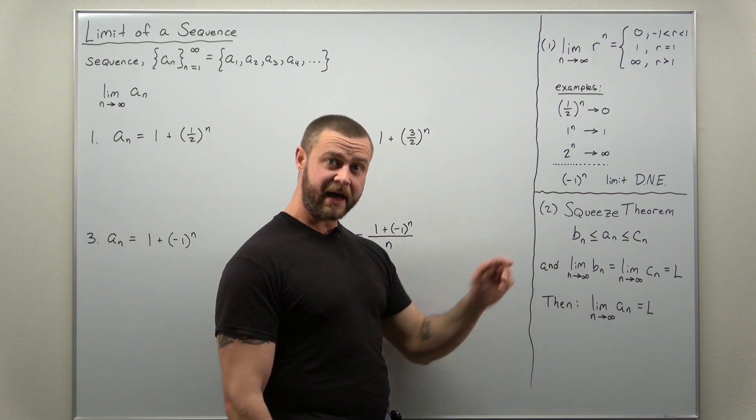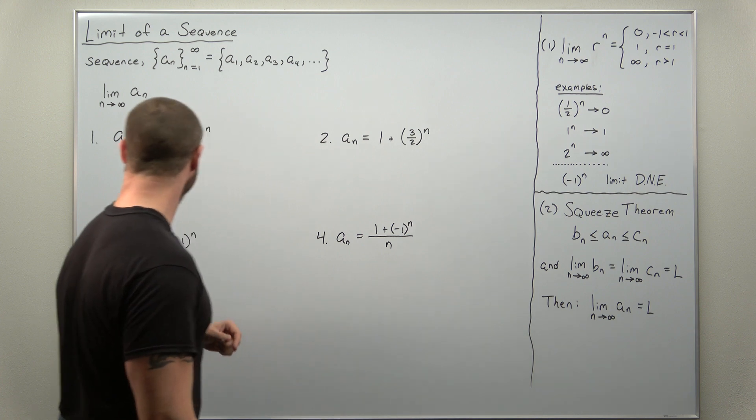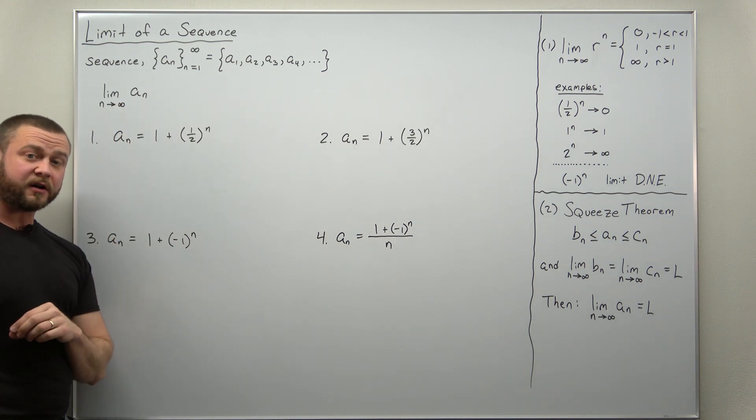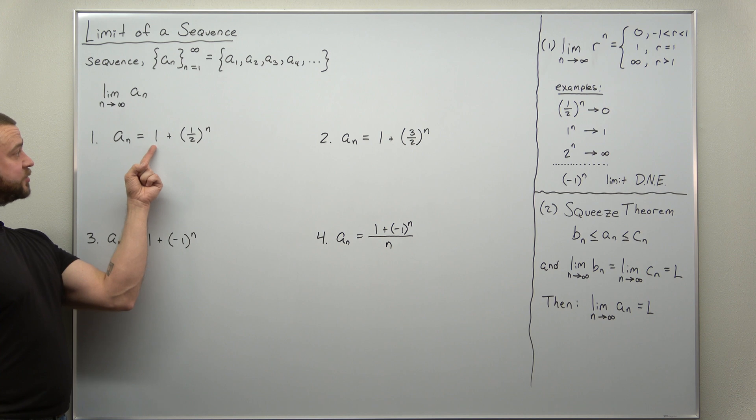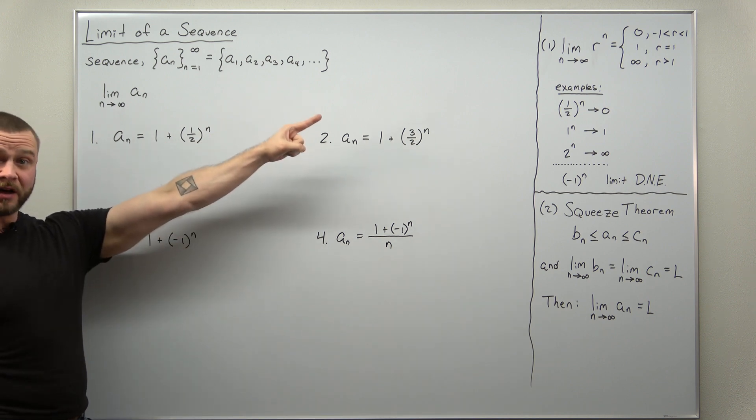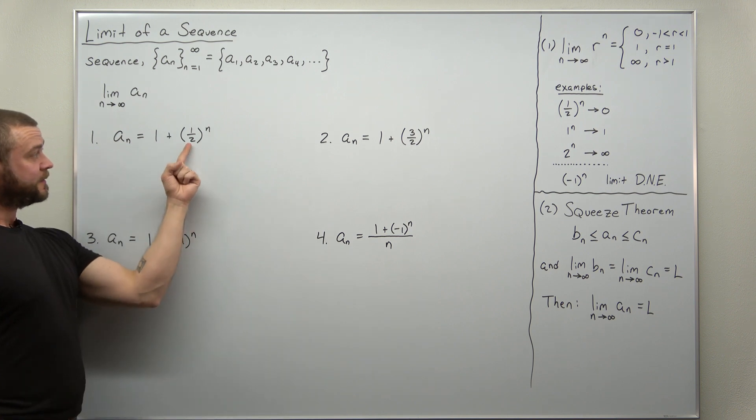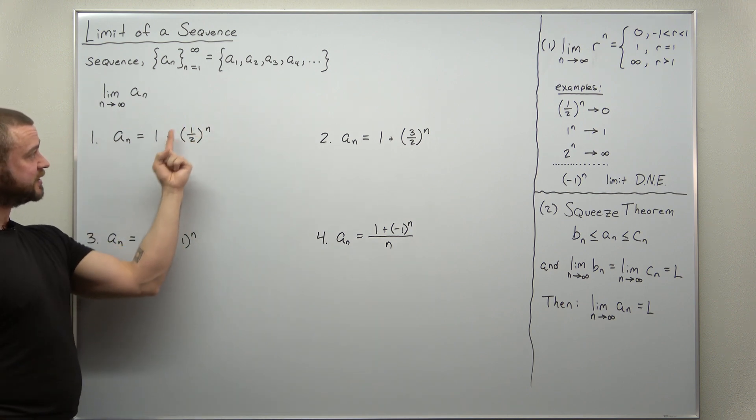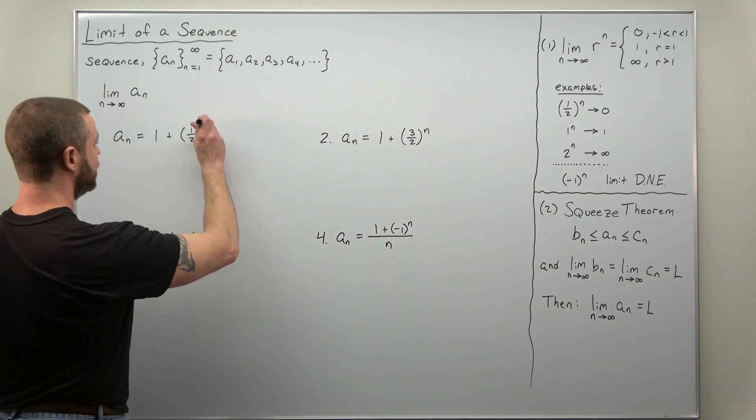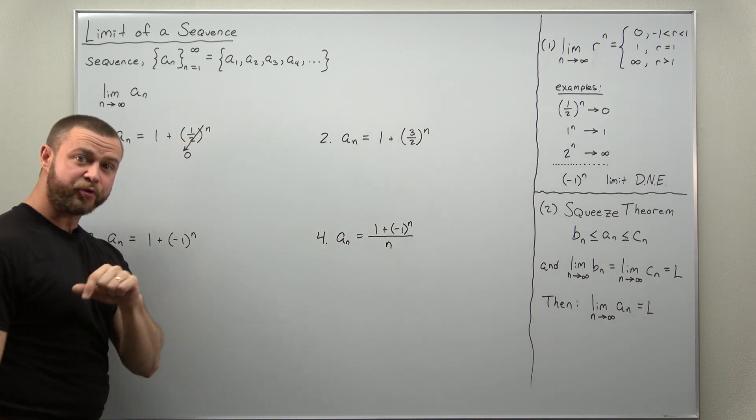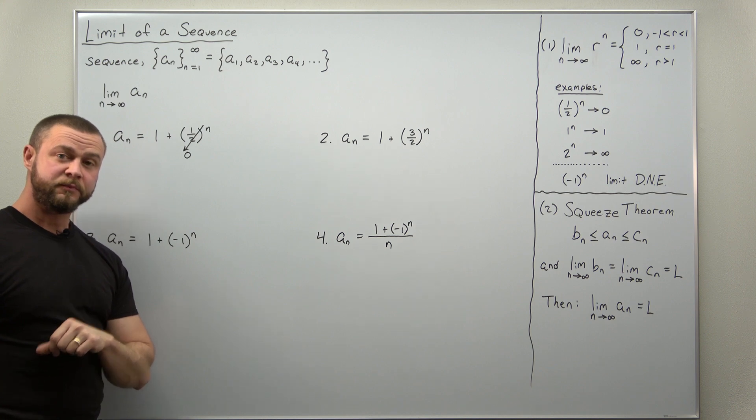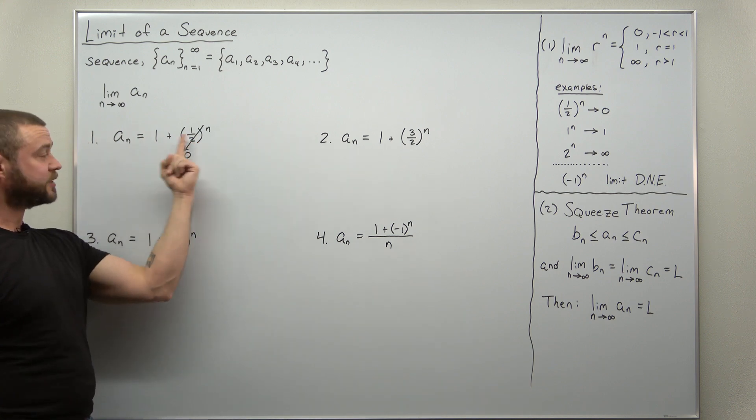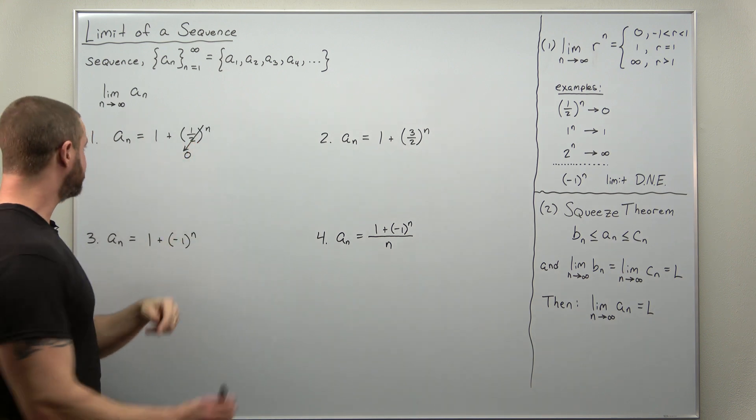Alright, so we'll get to that at some point. Let's take a look at our first one, a sub n, the term for our sequence, is defined as one plus a half to the n. And that's basically our first result. The value of r here is one half. As n increases, this term is going to approach zero. So since this term approaches zero, it looks like the whole thing is going to approach one.